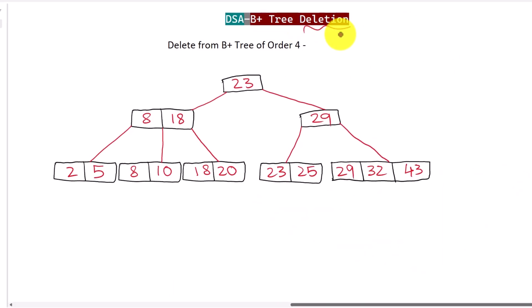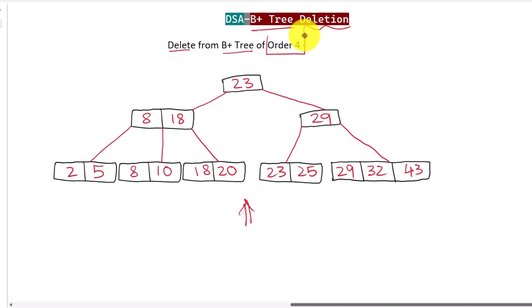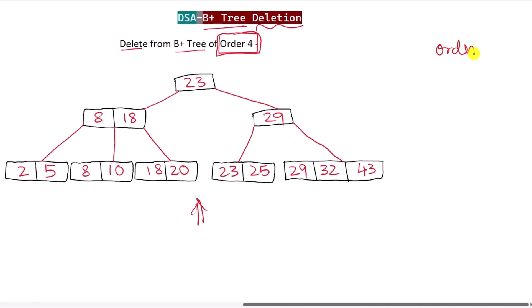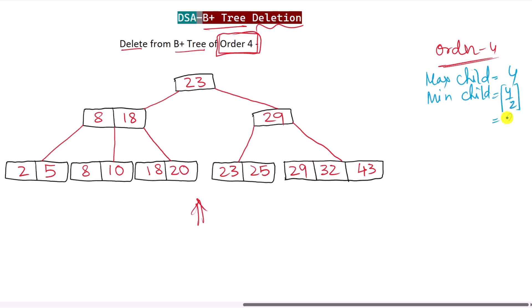Let's see how we can perform deletion in a B+ tree. Here we have a B+ tree and we need to perform deletion. The order of the tree is 4, which means the maximum number of children each node can have is 4. The minimum number of children will be ceiling of 4/2, which is 2.